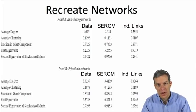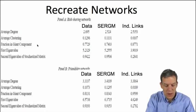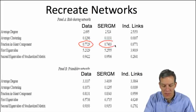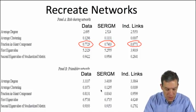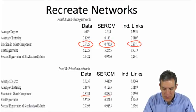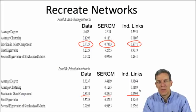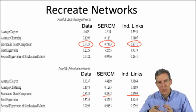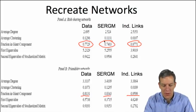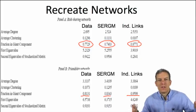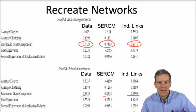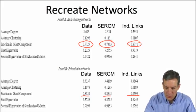Looking at the fraction of nodes in a giant component: the actual data show about 77%, the ERGM gives about 74%, but the independent links model is up at 87% — building too large a giant component. For friendship networks: actual 81%, ERGM 83%, but independent links at 96%. The independent links model is not recreating the component structure well, because it forms things that look more like trees rather than tightly clustered triangles.